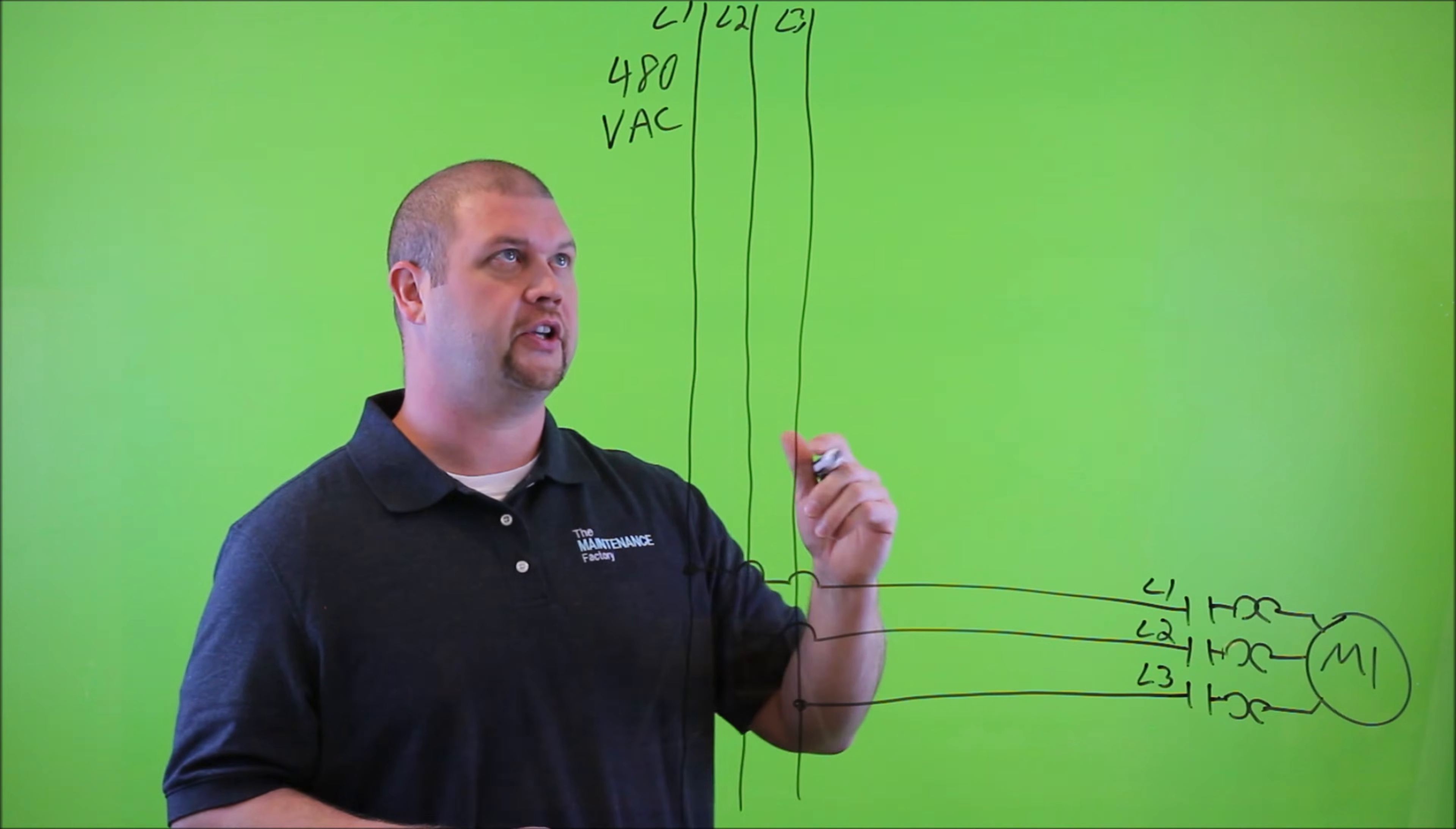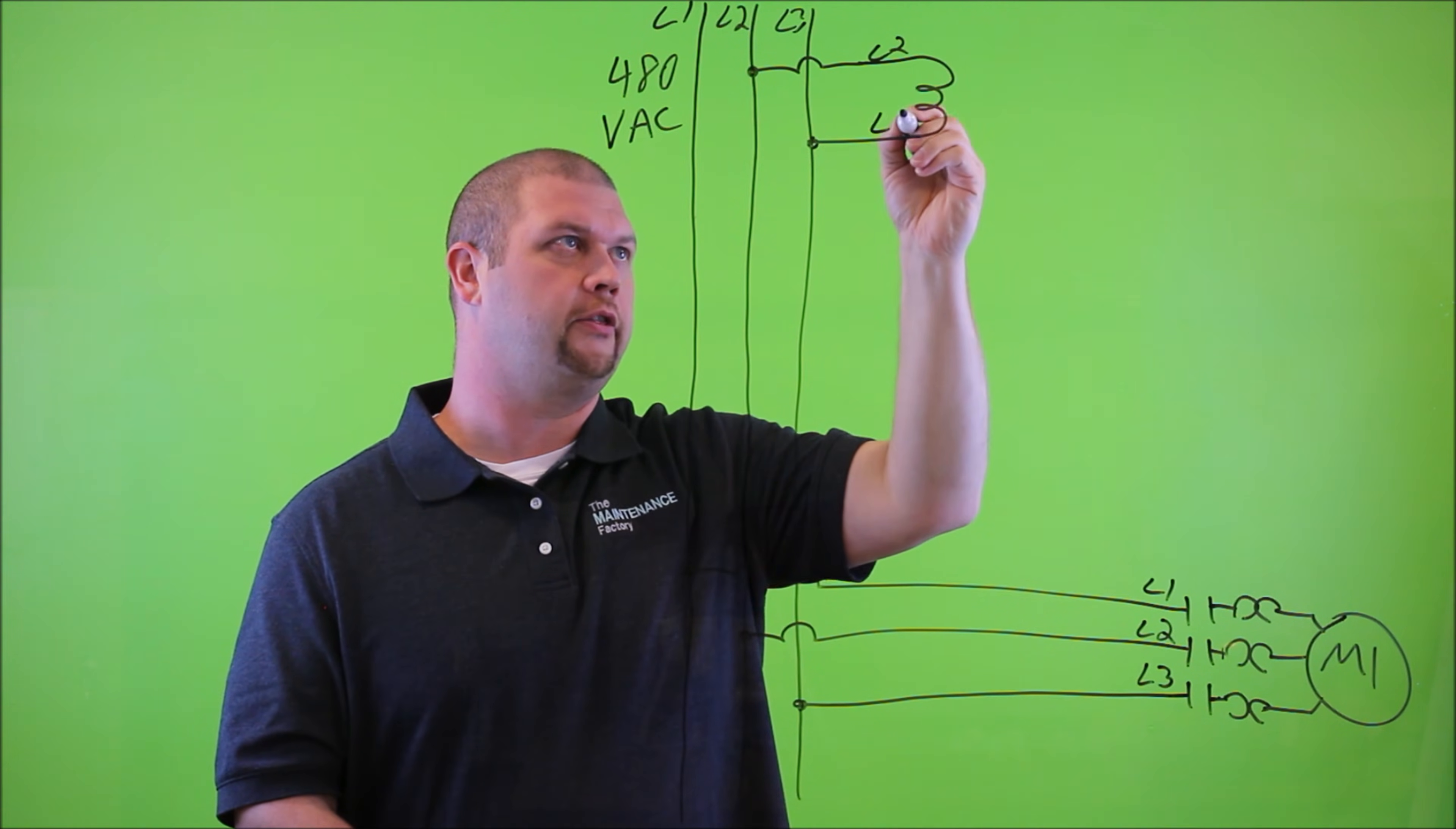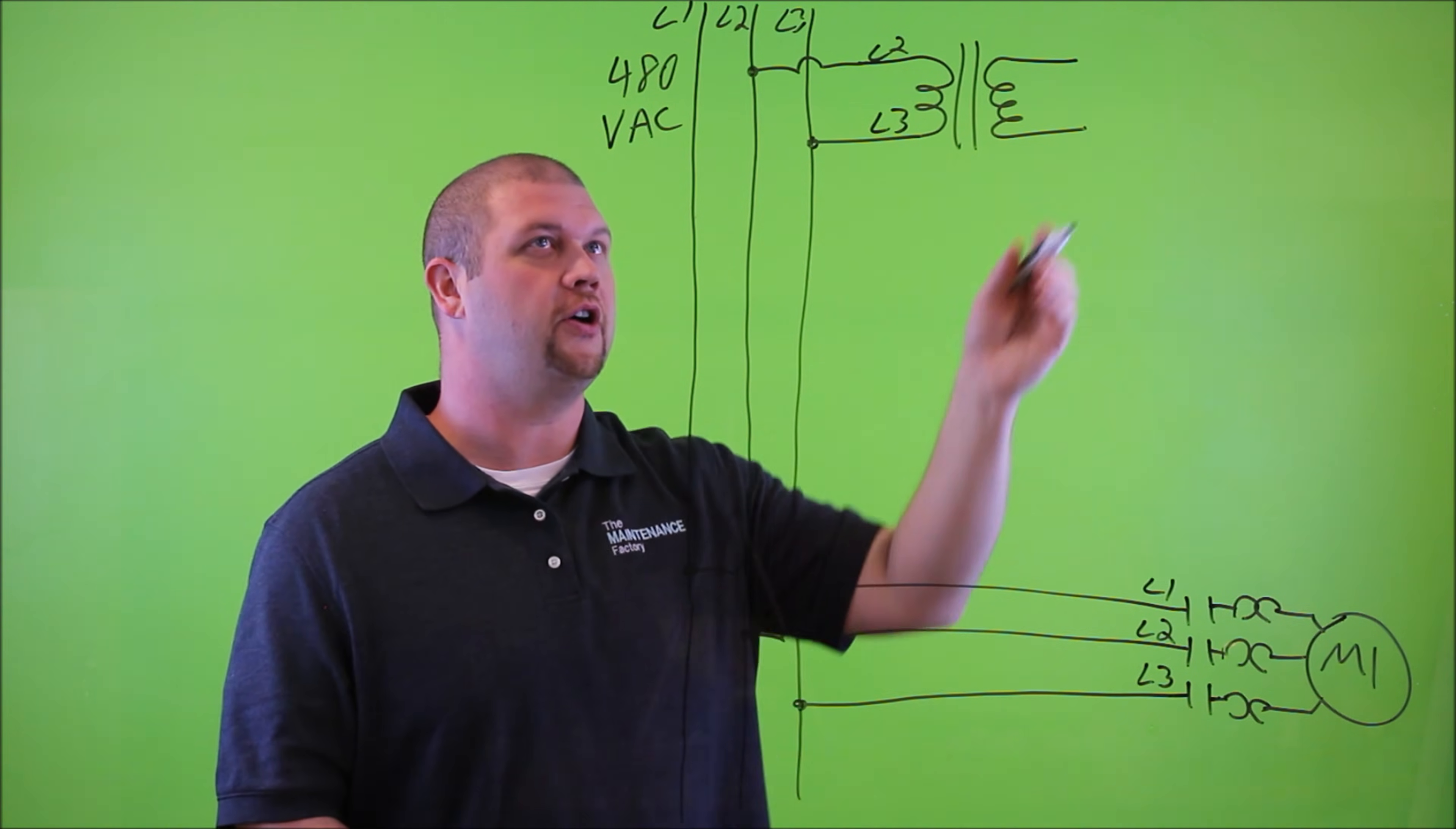Now, the contactor itself is a normally open device in the sense that from this point to this point, current cannot flow in its normal state. It has to change states, and you do that by energizing the coil for the contactor. And we're going to get into that in just a second.